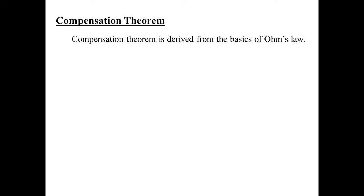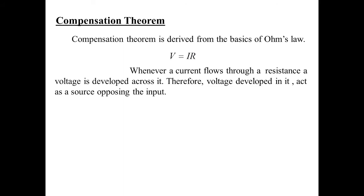Compensation Theorem is derived from the basics of Ohm's law. Ohm's law states that V is equal to IR at constant temperature. So whenever a current flows through a resistance, a voltage is developed across it. Therefore, the voltage developed in it acts as a source opposing the input.